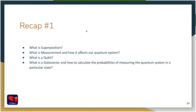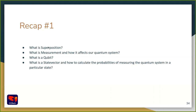Let's take a moment to recap what we saw in this first part. You should have at least a vague idea about what superposition is, what a measurement is and how it affects our quantum system, and what a qubit is. Finally, more mathematically, you should know what a state vector is and how to calculate the probabilities of measuring the quantum system in a particular state. We'll take a moment to see if there are any questions about this first part — superposition, measurement, probabilities, state vectors.